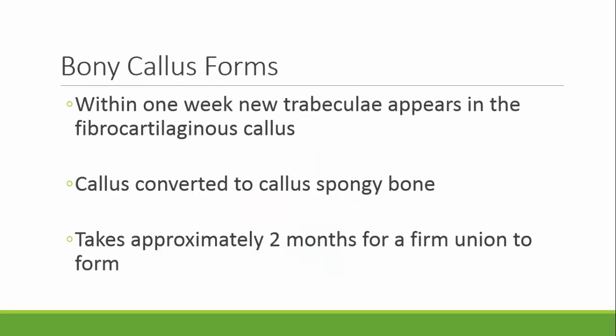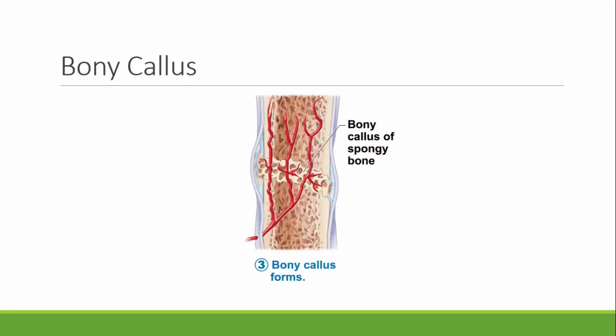Next is the bony callus. Within one week, new trabeculae appear in the fibrocartilaginous callus. The callus is converted to cancellous bone, and this takes approximately two months for a firm union to form. Pictured here is the bone callus, and as you can see, the bone is starting to reform.